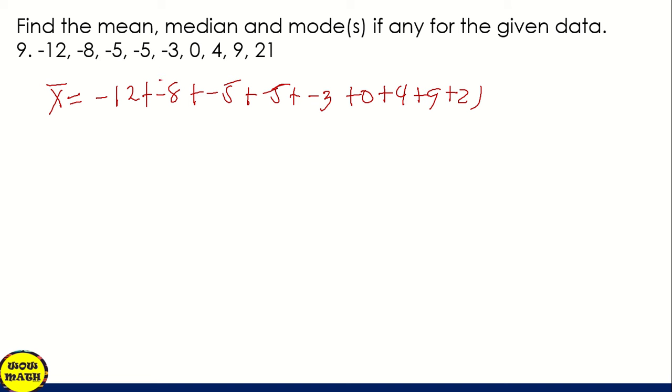Para hindi kayo malito, lagyan natin ng parenthesis ito. All over 9. If we're going to add, this is equal to 1. If we're going to add all of this, that is 1. So 1 over 9, the answer is 0.11.